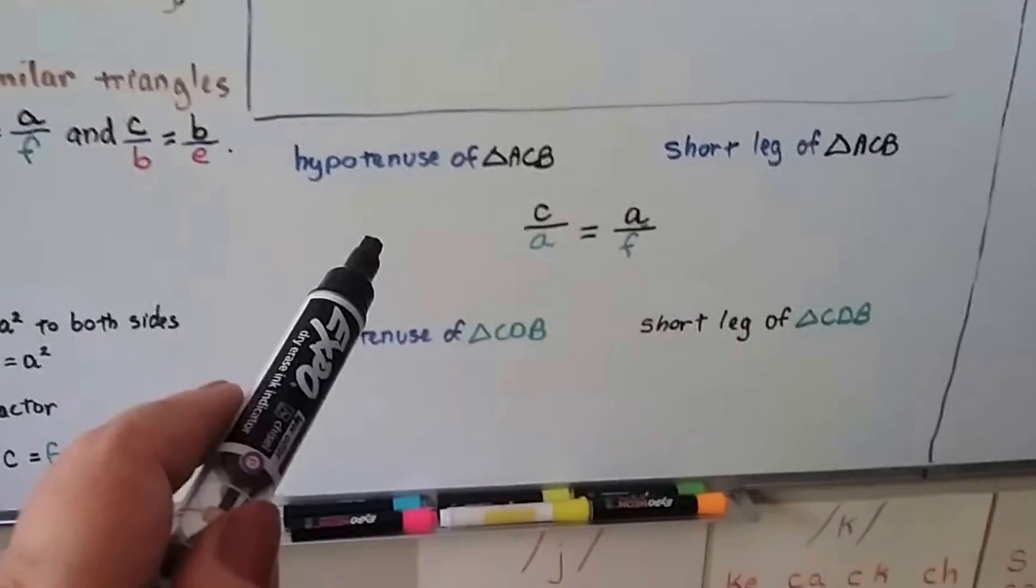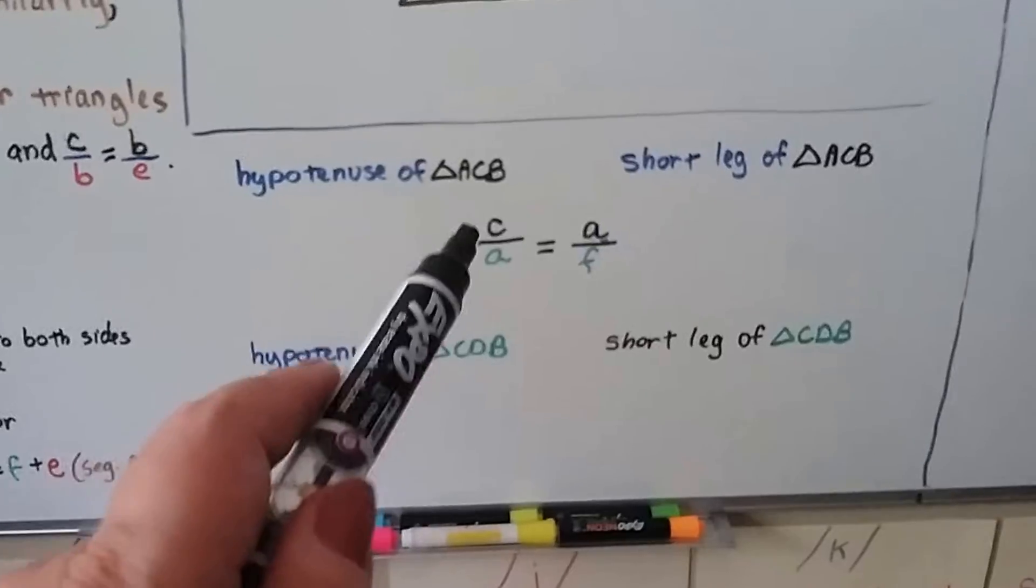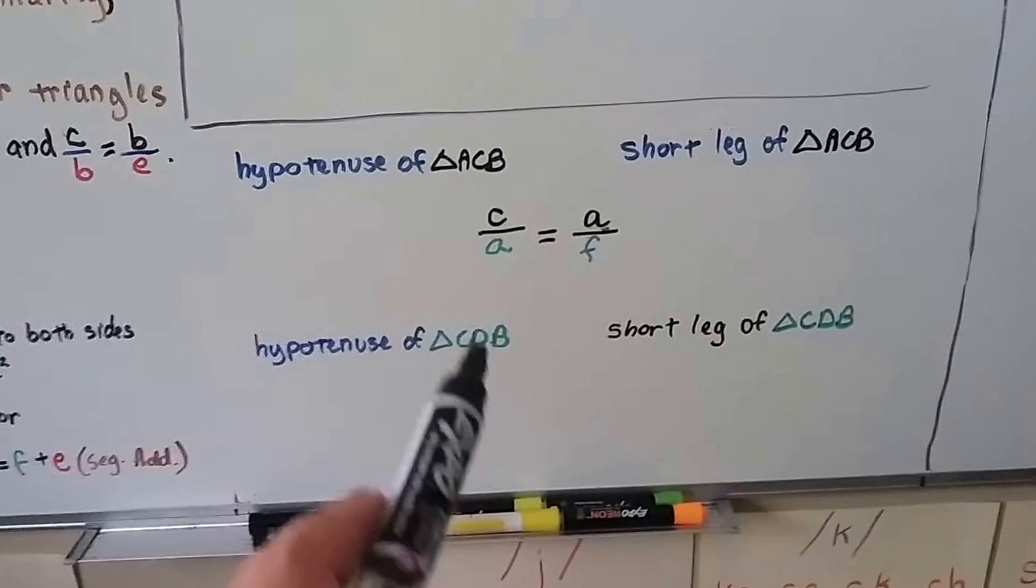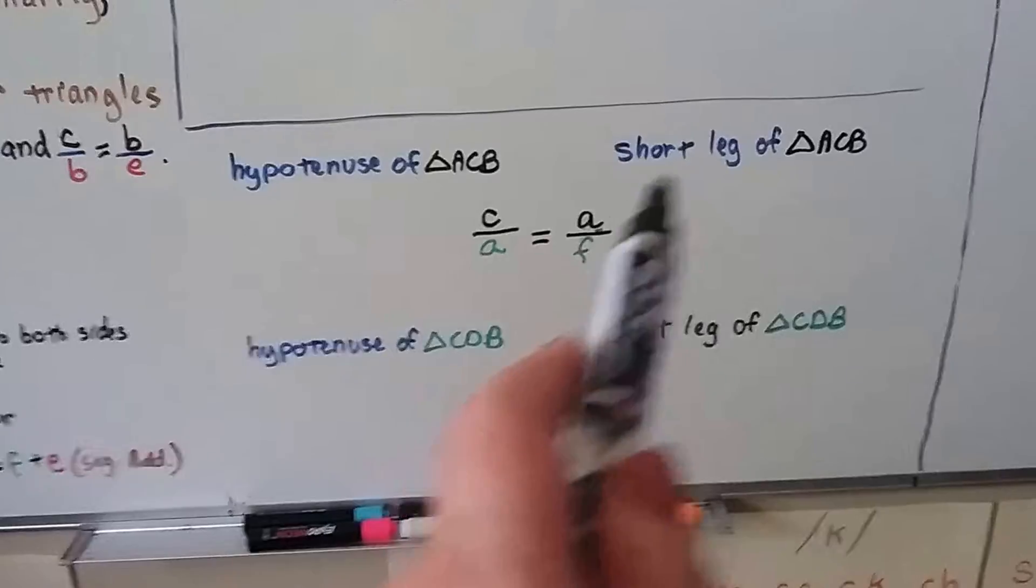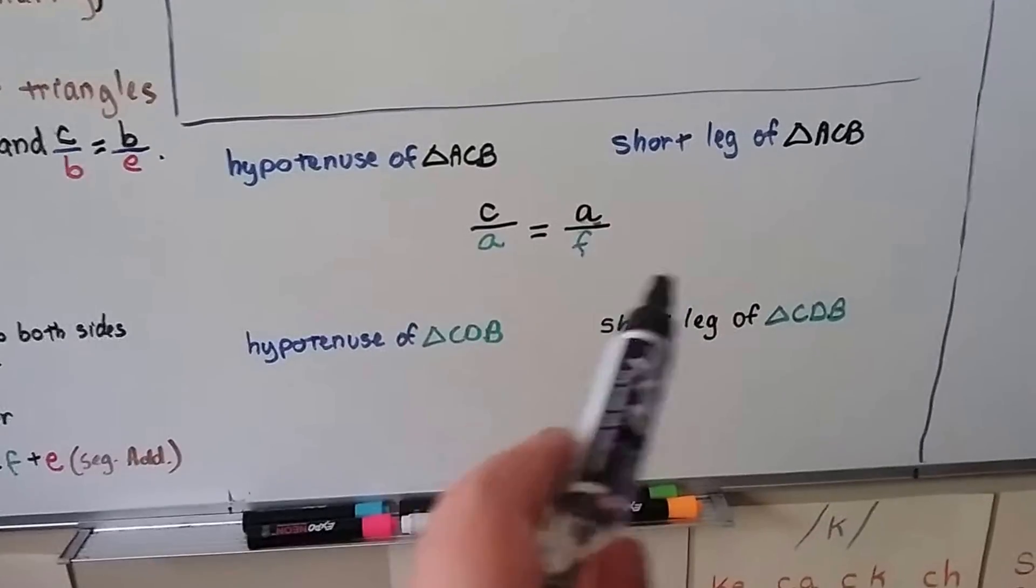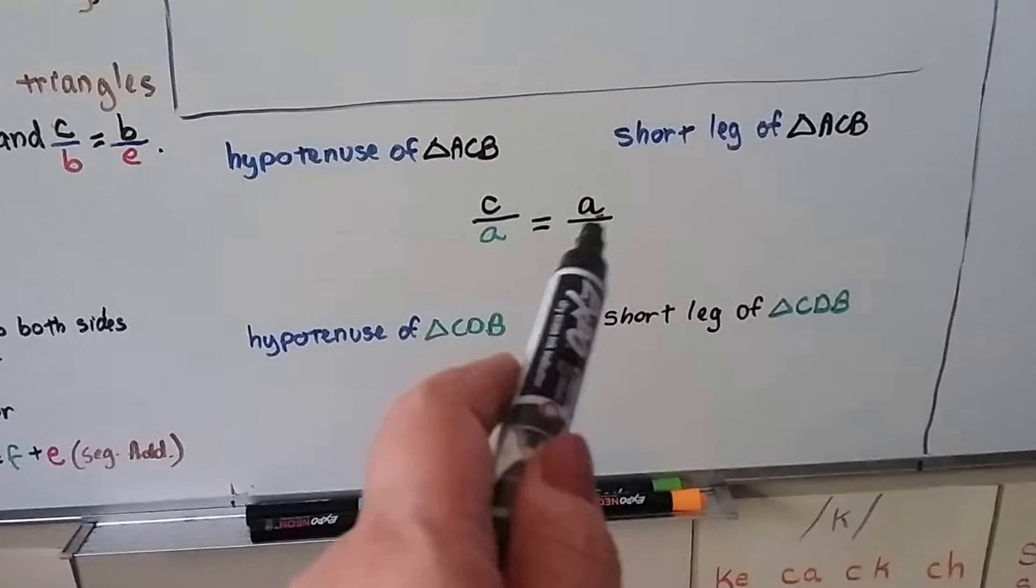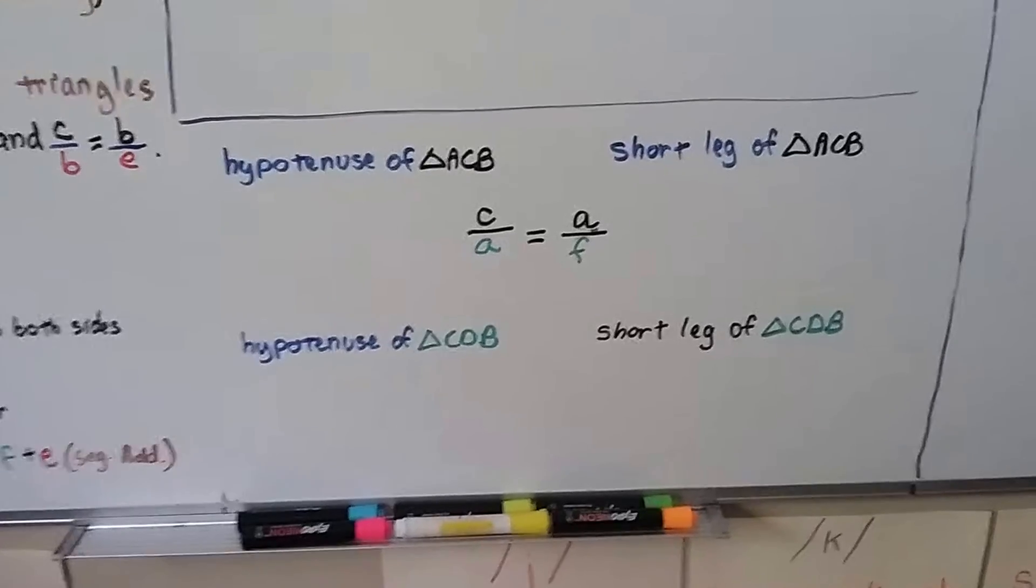So what's happening is, it's the hypotenuse of the big black triangle, ACB, over the hypotenuse of the green one, CDB. Then we've got the short leg of triangle ACB over the short leg of triangle CDB, the green one. And we do the same thing for this one, for the red one.